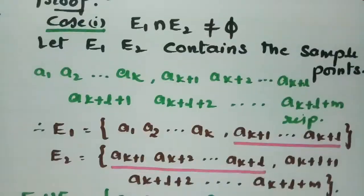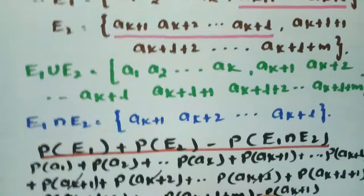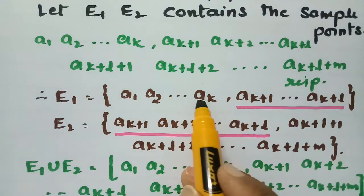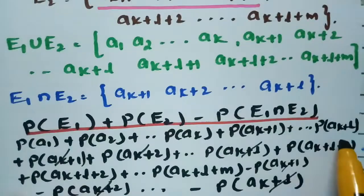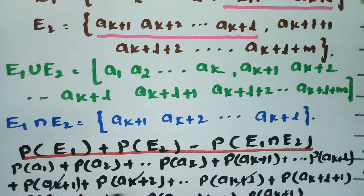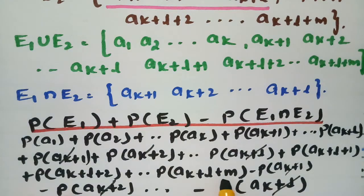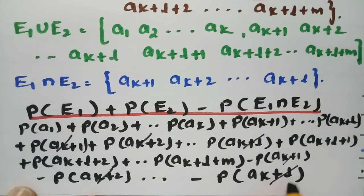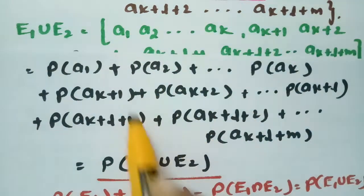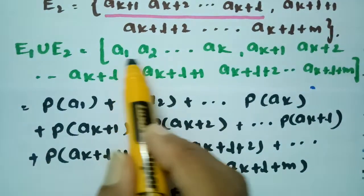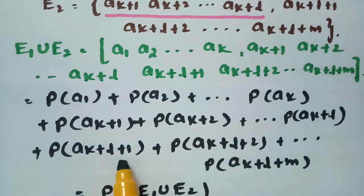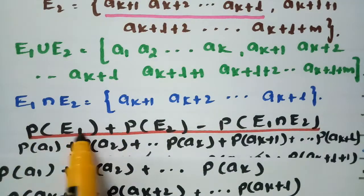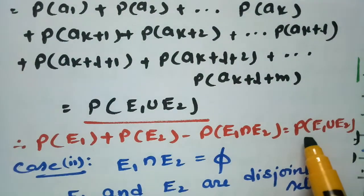We check P(E1) + P(E2) - P(E1 ∩ E2): from E1 we sum P(A1) through P(AK) and P(AK+1) through P(AK+L); from E2 we add P(AK+1) through P(AK+L) and P(AK+L+1) through P(AK+L+M); subtracting the intersection terms P(AK+1) through P(AK+L). Cancelling plus and minus terms, the remainder equals the elements of E1 ∪ E2, so P(E1) + P(E2) - P(E1 ∩ E2) = P(E1 ∪ E2).